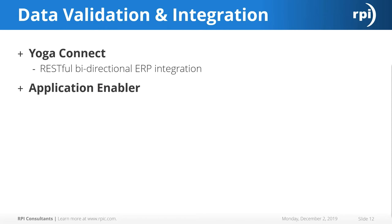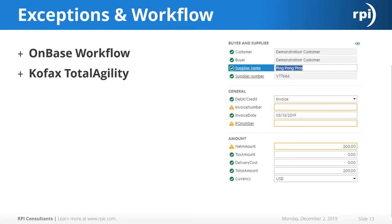Once we receive the document and capture the information, we want to validate it. Data validation can be done in Yoga Connect or with Application Enabler. For exceptions, you can use OnBase Workflow or COFAX Total Agility. A lot of the software we use will give you a warning if something is missing or if it's not sure whether the information captured is correct.